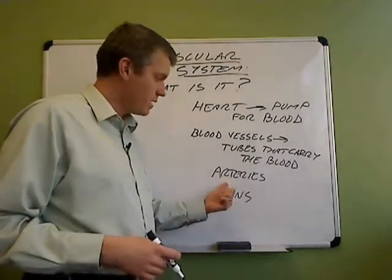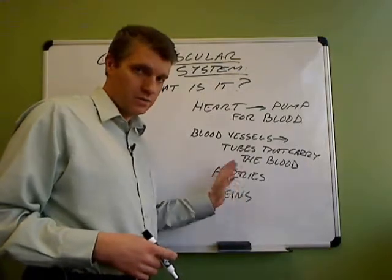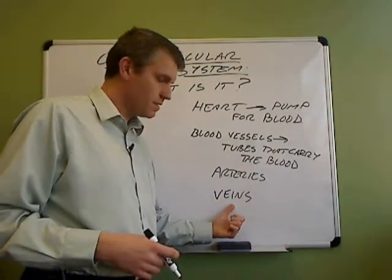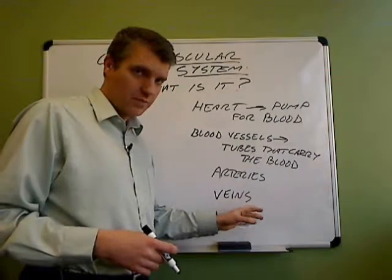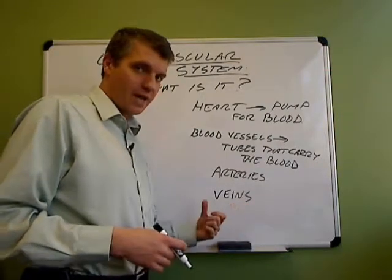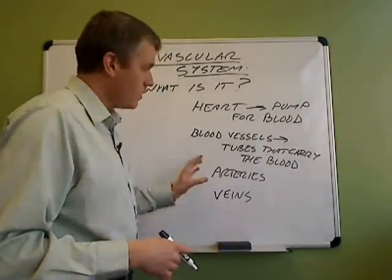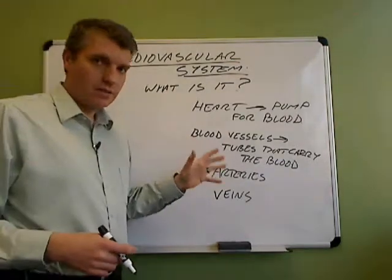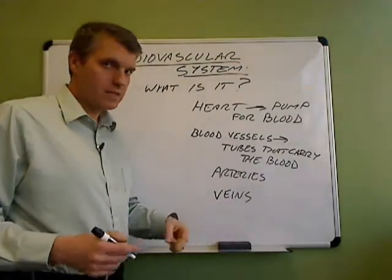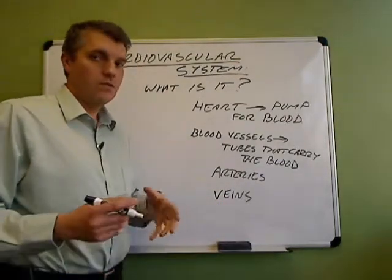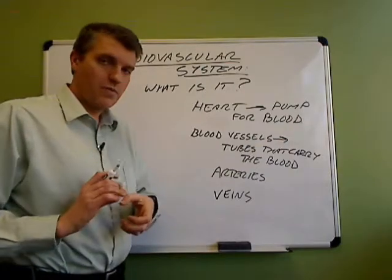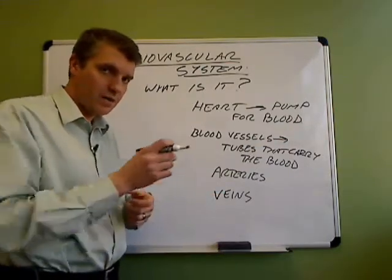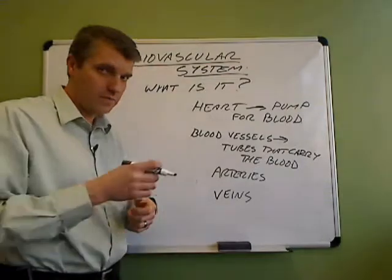So arteries carry blood from the heart out to the tissues of the body, and veins carry blood from the tissues of the body back to the heart. Another thing we can say about the circulatory system is that it is a closed system and a circular system — blood is pumped from the heart out to the body and then returns back to the heart again.